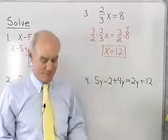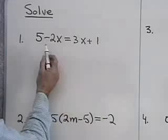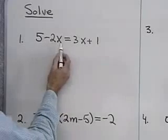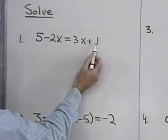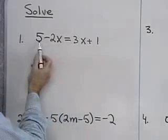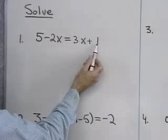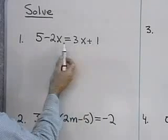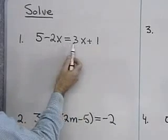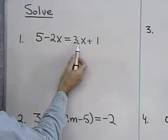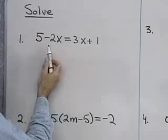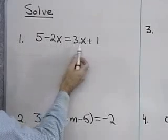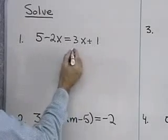Let's look at our fourth problem. I want to solve 5 minus 2x equals 3x plus 1. 5 and 1 are constant terms because they don't contain the variable. 2x and 3x are variable terms. I want all the variable terms on one side and constant terms on the other side.